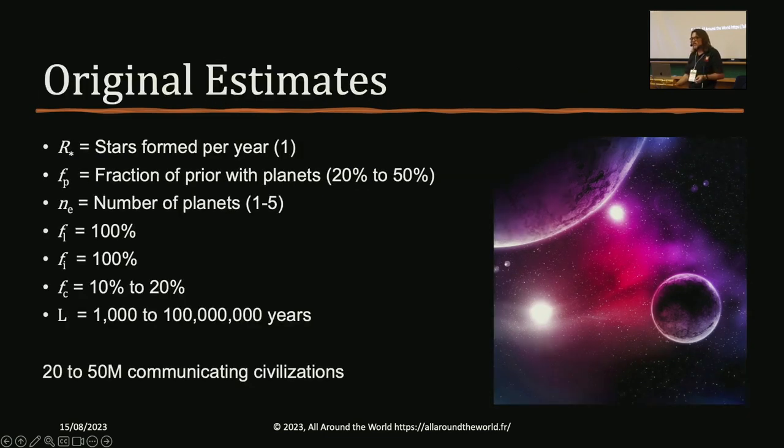In their original estimates that they put together back then, the first three numbers, these were some of the best astronomers in their field, and they actually had pretty good numbers for this. So they estimated maybe one star was formed a year in the Milky Way. Maybe 20% to 50% of those actually had planets, the number of planets that could support life per star, one to five. And then they went crazy. Out of those that could support life, all of them go on to develop life. All of them go on to have intelligent life, maybe 10 to 20% can communicate, and lifespan of civilization anywhere from 1,000 to 100 million years.